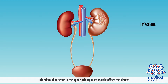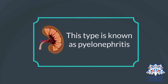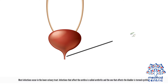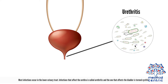Infections that occur in the upper urinary tract mostly affect the kidney. This type is known as pyelonephritis. Most infections occur in the lower urinary tract. Infections that affect the urethra are called urethritis, and the one that affects the bladder is termed cystitis.